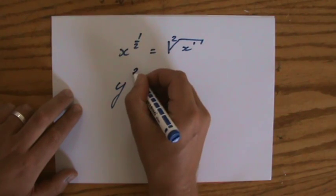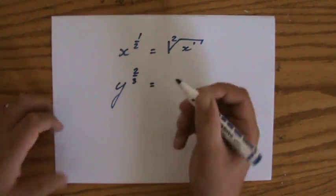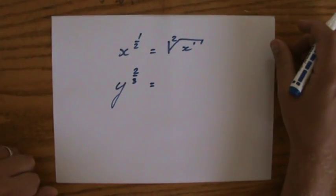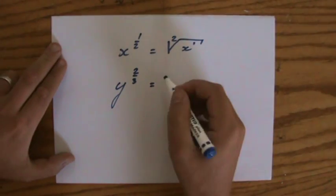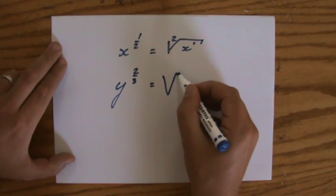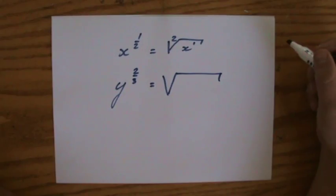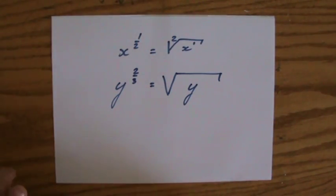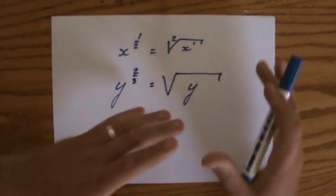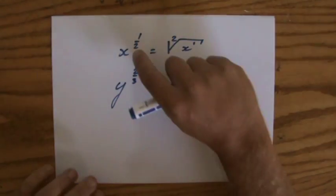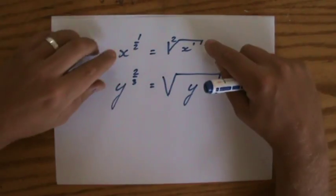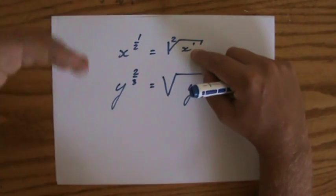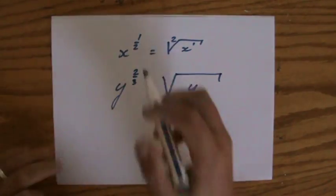But if you remember this one, then have a look at this one: y to the power of 2 over 3, which is also a fractional index. Now, don't get scared all of a sudden. Let's just draw the root sign and put the base inside. Now, 2 over 3. Where does the 3 go? Where does the 2 go? Well, to the power of a half is the square root of x to the power of 1. So,